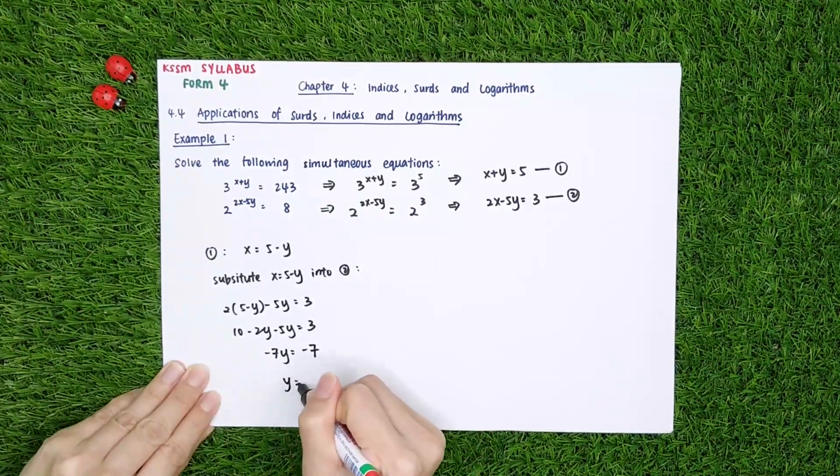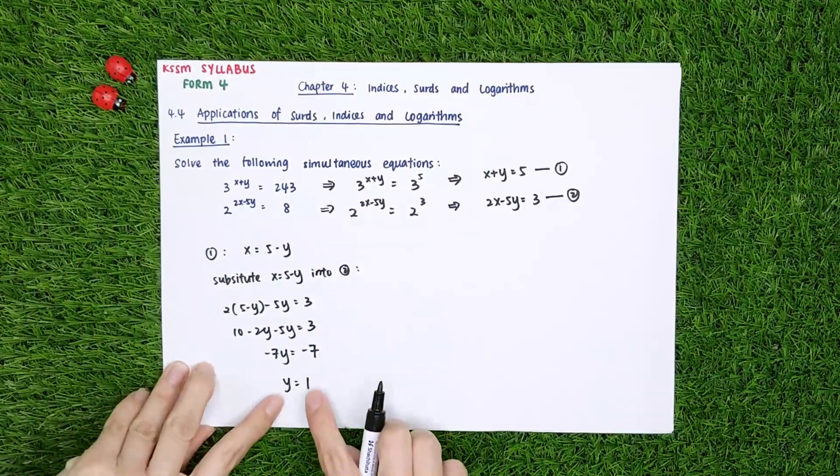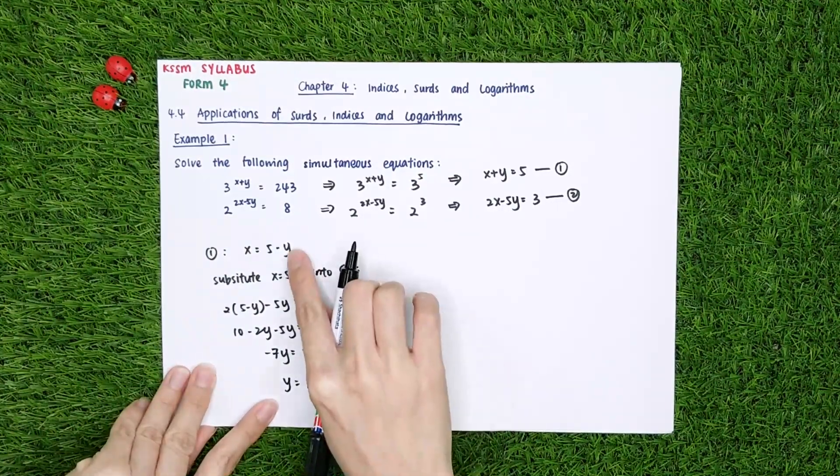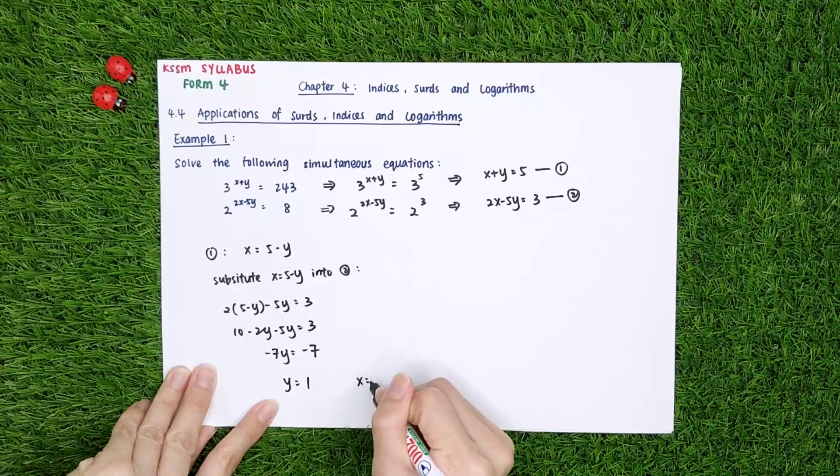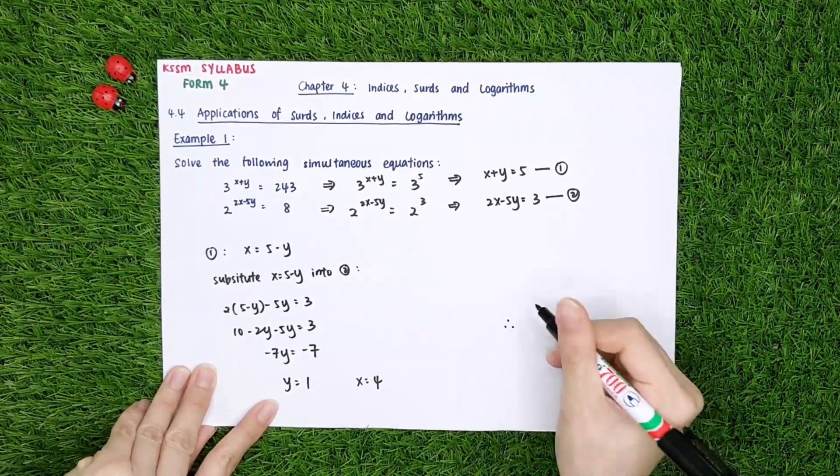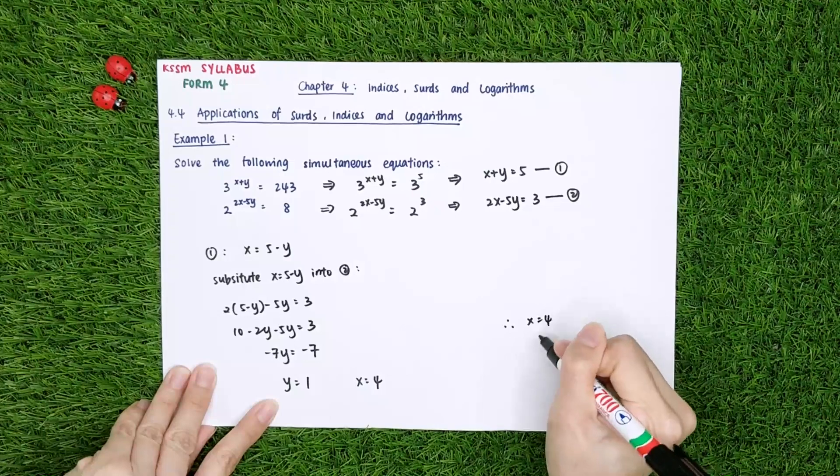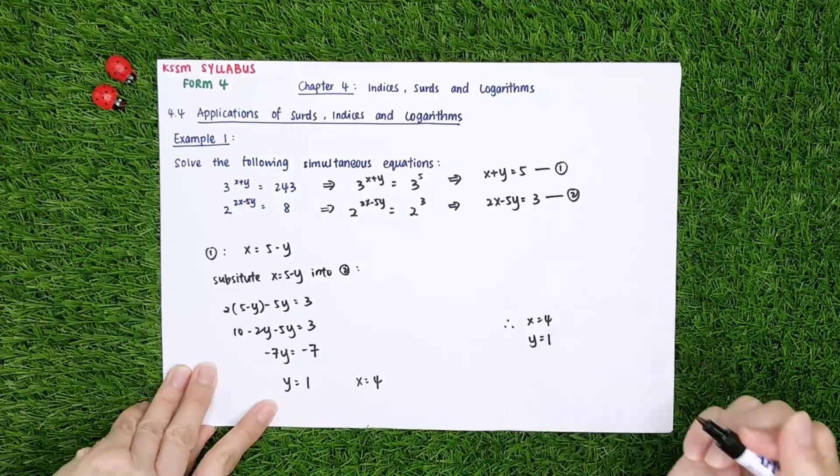And then y, you will be getting 1. So after you get your y value, you substitute into here, you will get your x value is equal to 4. So you can make the conclusion. x is equal to 4, y is equal to 1.